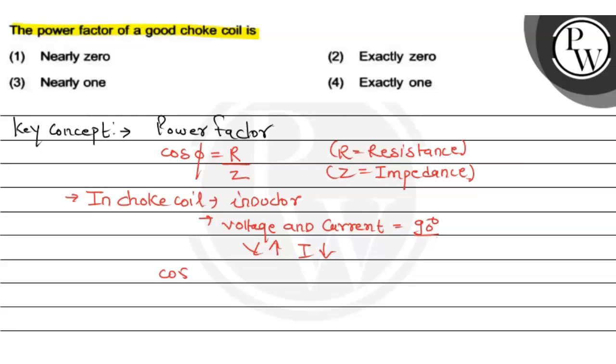So, cos φ, kitna ho gaya aapna pass? Yaha, φ kitna ho gaya bachoh, 90 degree. The cos 90 key value kitna ho gaya, 0 ho gaya. To this kamaatla, power factor kitna ho gaya bachoh apna? So, power factor yaha se aagaya aapna pass, 0, okay?